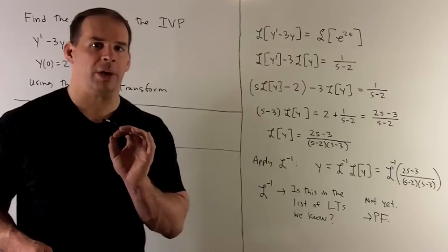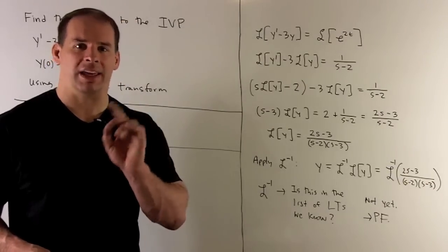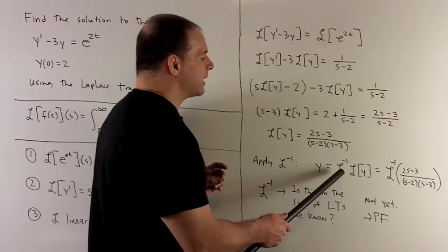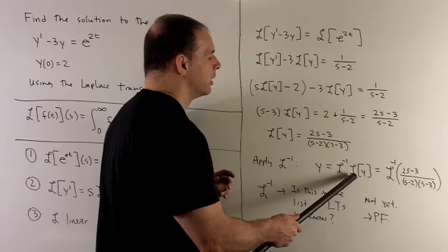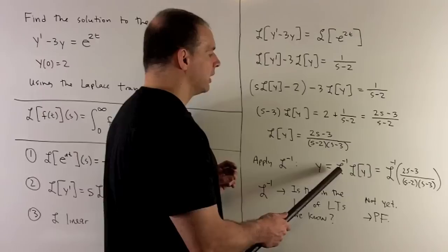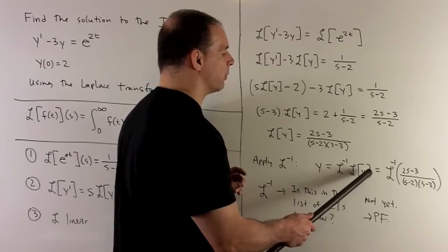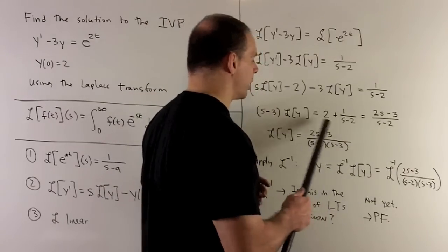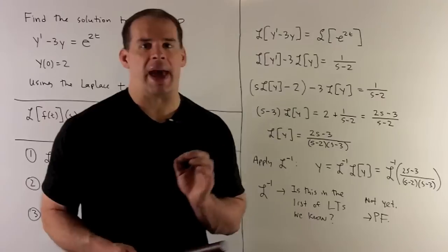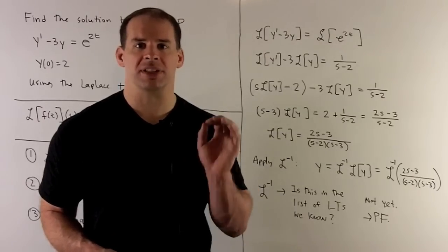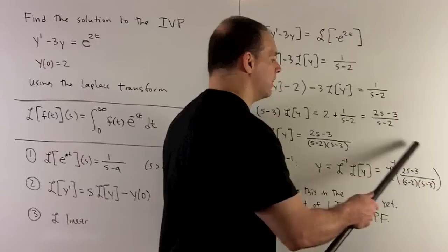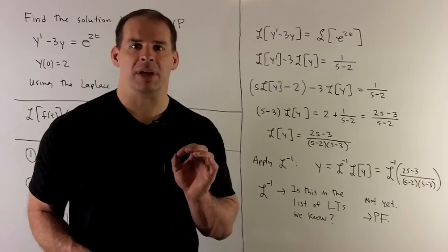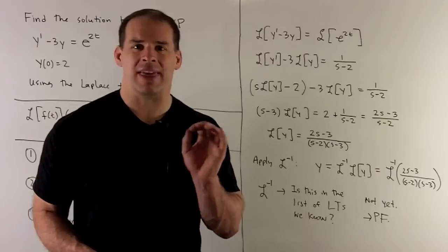Now, to proceed, we apply the inverse Laplace transform to both sides. The inverse Laplace transform cancels the Laplace transform, so the left side gives us y, which also equals the inverse Laplace transform of our expression. We go to our list of Laplace transforms to see if we recognize this. In this case it's not immediately familiar, so we need to do more work — the next step is partial fractions, and then we recheck our list.